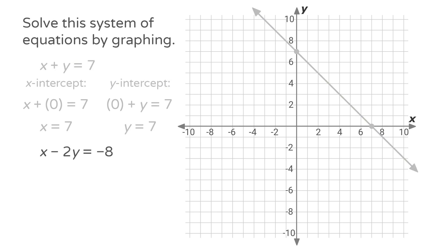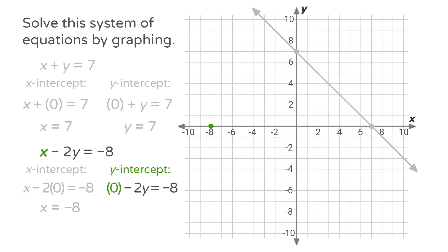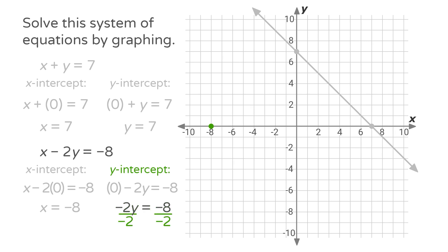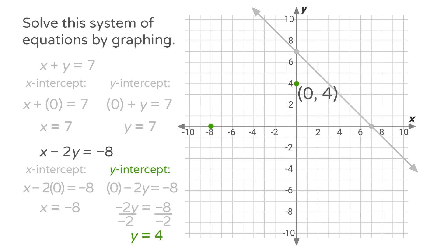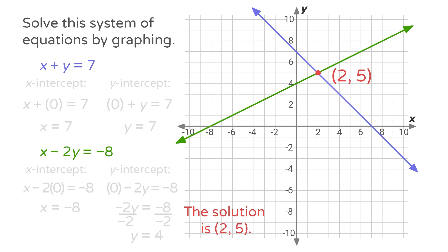The second equation is x minus 2y equals negative 8, also in standard form. Let's graph it by finding the x-intercept and the y-intercept. The x-intercept is where y equals 0. Plugging y equals 0 into the equation, we get x minus 2 times 0 equals negative 8. Since 2 times 0 is 0, we get x equals negative 8, so one point on the graph is (-8, 0). The y-intercept is where x equals 0. Plugging x equals 0, we get negative 2y equals negative 8. Dividing each side by negative 2, we have y equals 4, so another point on the graph is (0, 4). We can plot both points and draw a line connecting them. The lines intersect at (2, 5), so the solution to the system of equations is (2, 5).